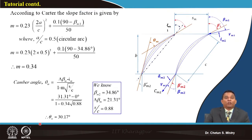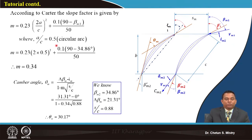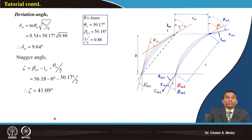Blade aerofoil geometric parameters are calculated using the Carter rule. With a circular camber line and e/c = 0.5, the slope factor m is 0.34, and the camber angle is 30.17°. Incidence angle at mid-station is assumed to be 0. Deviation angle and stagger angle are then calculated — these are the cascade parameters, and the methodology remains the same.